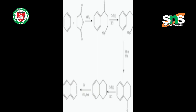Tris(4-nitrophenyl)methane, in the presence of a base, is converted into the corresponding methanide ion.